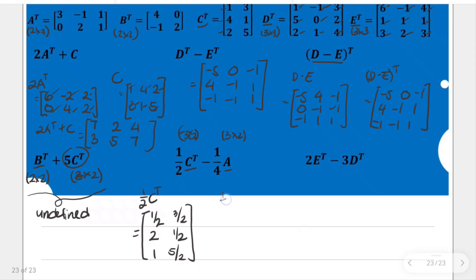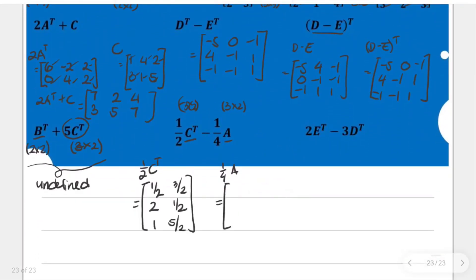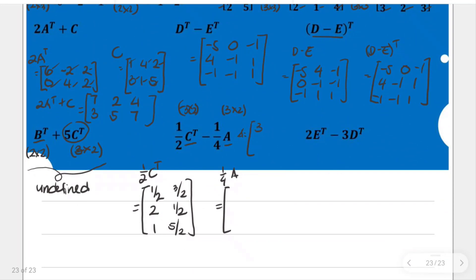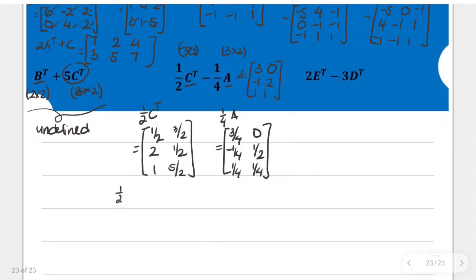Now for one fourth of A. Writing A here so we don't need to scroll: 5, 3, 0; negative 1, 2; 1, 1, 1. One fourth of that gives: 5 fourths, 3 fourths, 0; negative 1 fourth, one half; 1 fourth, 1 fourth, 1 fourth. Now we take the difference of one half of the transpose of C minus one fourth of A.